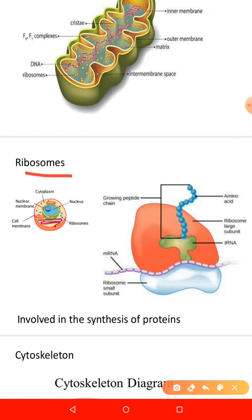Ribosomes are called protein factories because of their role in protein synthesis. The messenger RNA carries the genetic code for protein synthesis from the nucleus to the ribosomes. The ribosomes arrange amino acids into small units of proteins. Ribosomes attached to the rough endoplasmic reticulum are involved in synthesis of enzymatic proteins, hormonal proteins,